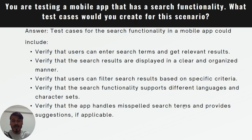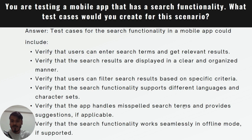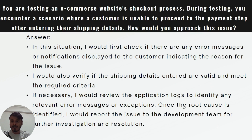Also verify that the app handles misspelled search terms and provides suggestions if applicable. For example, if I want to search for 'mobile' but type 'mobil', it should still show results based on that misspelled keyword. Additionally, verify that the search functionality works seamlessly in offline mode if it is supported — this is also very important.